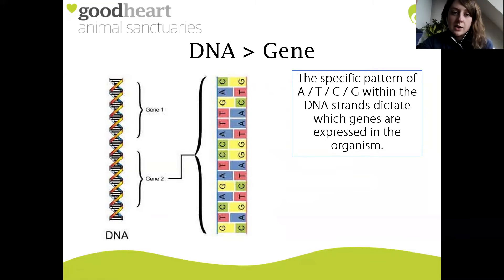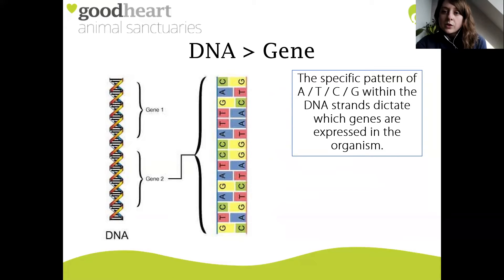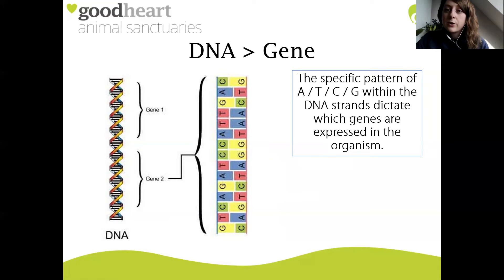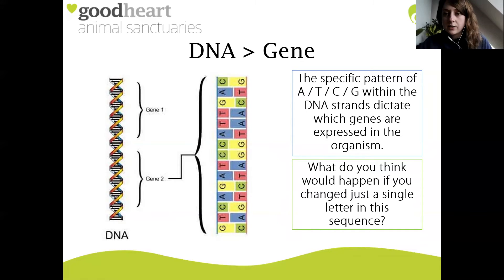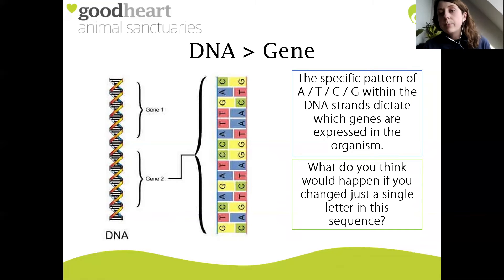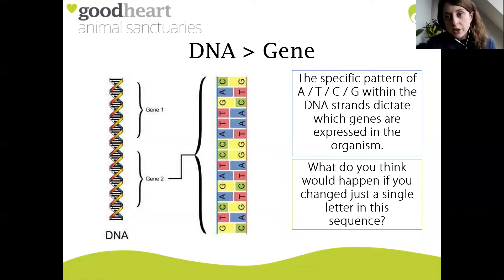If you were to change that sequence to say C, C, C, A, G, that could give you a blonde colour. So as you vary those letters, you also vary the physical characteristics expressed. Bear this in mind - what would happen if you changed just a single letter in this sequence? Remember, these genes apply to absolutely everything in the natural world, so even changing a single letter could have enormous consequences for the organism and species as a whole.